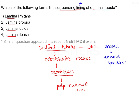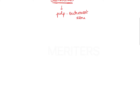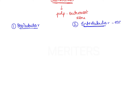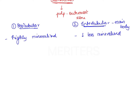Let's discuss important points regarding both types of dentin. Peritubular dentin surrounds the dentinal tubules immediately, whereas intertubular dentin is present between the tubules and therefore forms the main body of dentin. Regarding composition, peritubular dentin is highly mineralized — more so than intertubular dentin. Intertubular dentin is comparatively less mineralized, but both types are mineralized in nature.